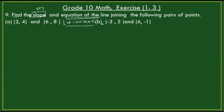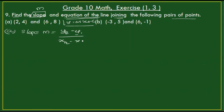Joining the following pair of points. The equation of the line will use the slope formula. The slope formula is m equal to y2 minus y1 by x2 minus x1. Here we have point x1, y1 and point x2, y2, where m is the slope.